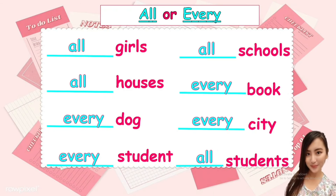It's easy, right? Again, we use all for plural nouns — if there are many — and we use every for singular nouns — if there's only one. Let's read: all girls, all houses, every dog, every student, all schools, every book, every city, all students.